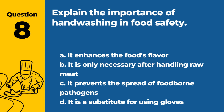Question 8. Explain the importance of hand-washing in food safety. A. It enhances the food's flavor. B. It is only necessary after handling raw meat. C. It prevents the spread of food-borne pathogens. D. It is a substitute for using gloves. Answer: C. It prevents the spread of food-borne pathogens. Hand-washing is crucial in food safety, as it prevents the spread of food-borne pathogens.